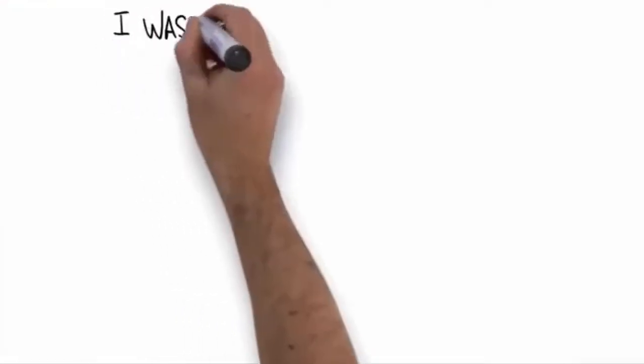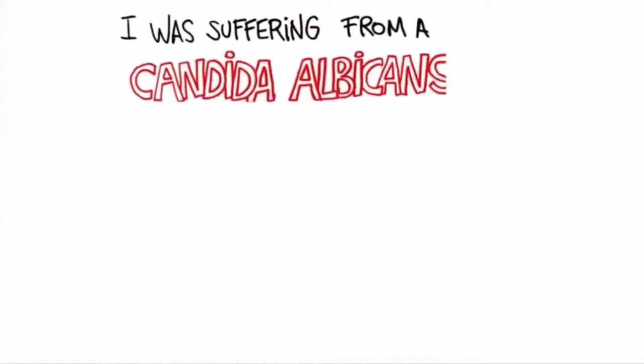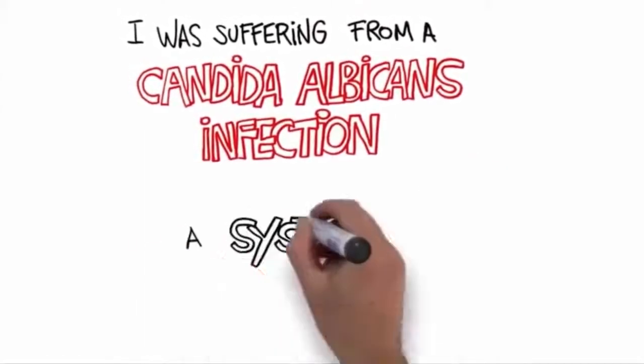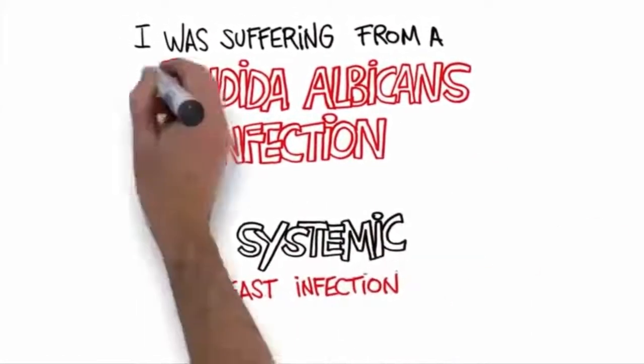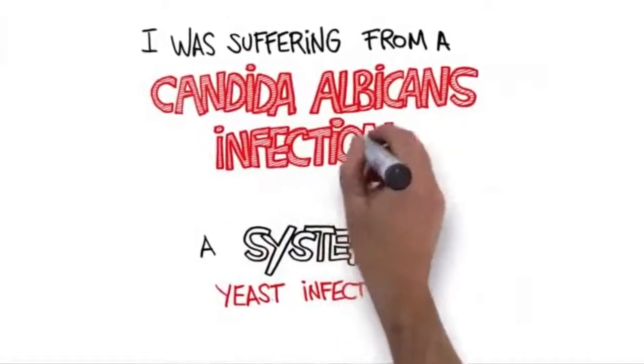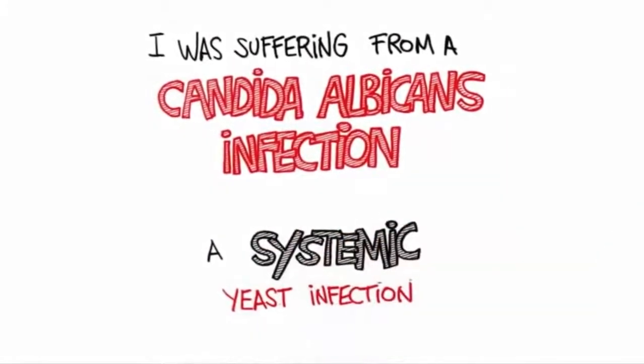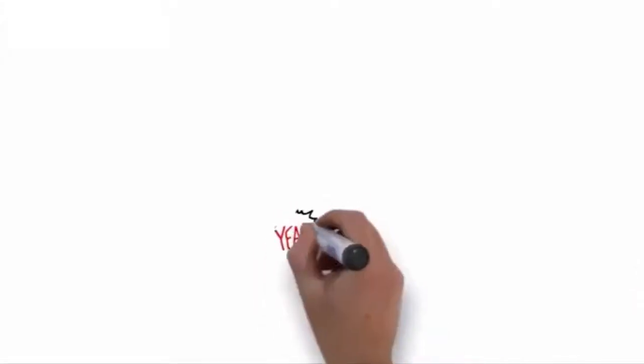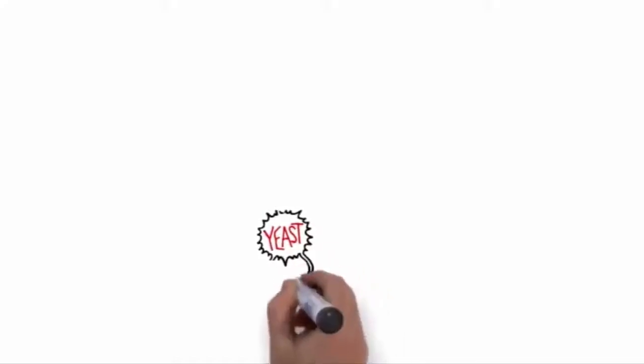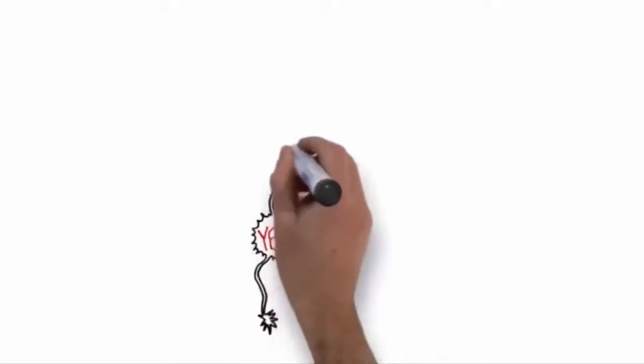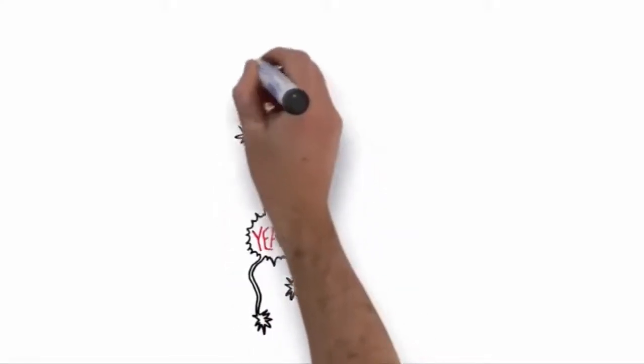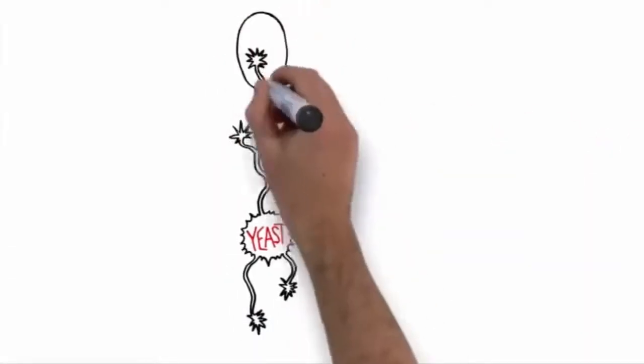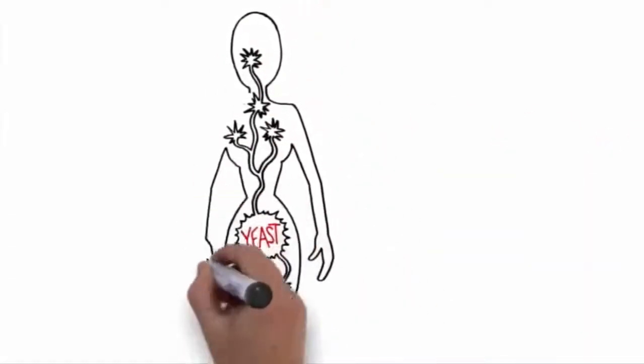It was only while I was seeing the naturopath that I learned that I was suffering from a Candida albicans infection, a systemic yeast infection. There was yeast overload throughout my entire body, and that's why my symptoms were so varied and getting worse. The yeast had started as typical vaginal and sinus infections, which is very common, and then spread throughout my internal system, attacking virtually every organ and tissue it came in contact with. No wonder I felt so sick all of the time.